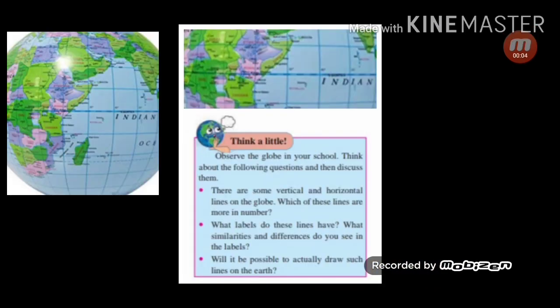Students, here is a map. In this map, you can see there are some vertical lines and some are horizontal lines. Now, in this lesson, we are going to see what these lines are called and how many these lines are there.